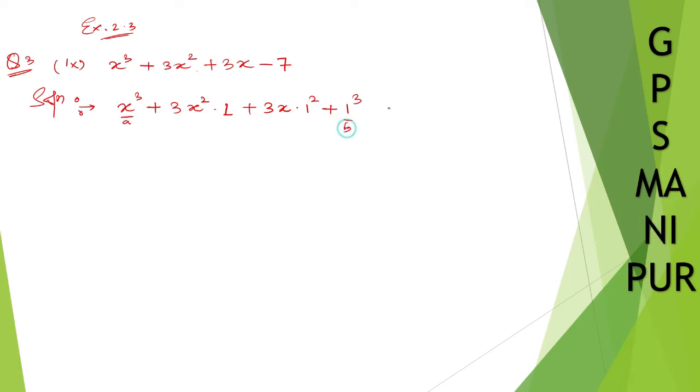Then minus 7. So now let us look something here. Look, x cubed, x cubed is here. Thrice, 3 into 1, 3, 3x squared, it is there. 3 into 1 squared, it is 1, so 3 ones are 3x. It is also there. Plus 1 cubed, it is not there, and minus 7 is here.